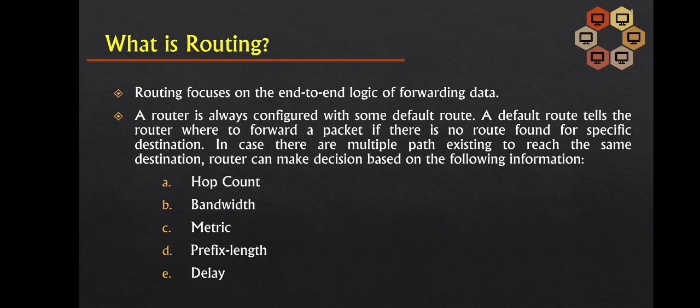What is routing? Routing focuses on the end-to-end logic of forwarding data. Routing is the process of selecting a path for data to be transferred from the source to the destination. A router is a special device that performs routing. When a device has multiple paths to a destination, it always prefers one path over the other. Routing is the name given to this selection process. Routing can be accomplished through the use of special network devices such as routers, or through software processes. Software-based routers have limited functionality and range.